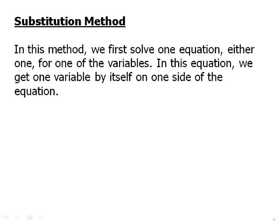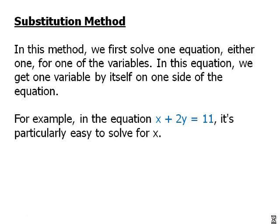So the substitution method. In this method, we will first solve one equation, either one, for one of the variables. In this equation, we'll get one variable by itself on one side of the equation. So those two equations I gave a moment ago, one of the equations was x plus 2y equals 11. And that's an equation where it's particularly easy to get x by itself. All I'm going to do is subtract 2y from both sides, and I get x equals 11 minus 2y. So hold on to that for a second. X equals 11 minus 2y.